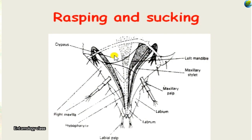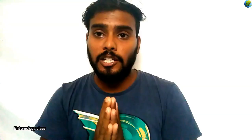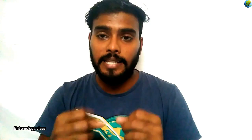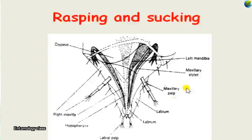These stylets, instead of directly piercing inside the plant tissue, actually scrape the plant tissue — a process known as laceration. They lacerate or scrape the plant tissue, and from the oozing plant sap that results, the mouth cone sucks in the fluid. In this case, both the maxillary palp and the labial palp are present.